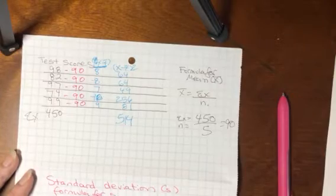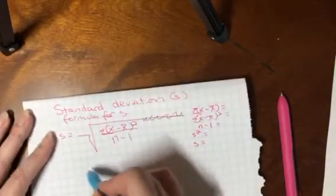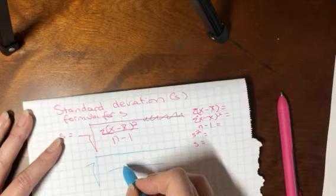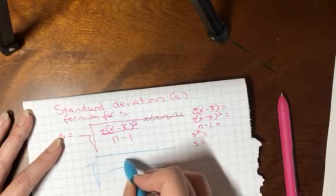And so now we have our numerator there. To fill out our numerator we've got 514 here.